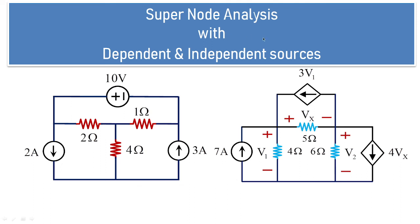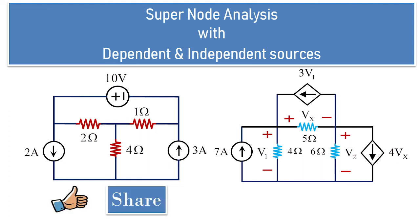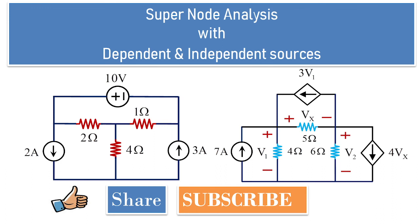In today's class we are done with super node techniques, especially the problems involved with dependent sources. Whenever you have independent sources you can also solve the circuit using super node analysis and cross-check the result with mesh analysis. Similarly, whether you have dependent voltage or current sources, you can cross-check the results using both mesh analysis and node analysis. I hope you liked my video — please share among your friends, subscribe to my channel, and press the bell icon for future notifications. Thank you.